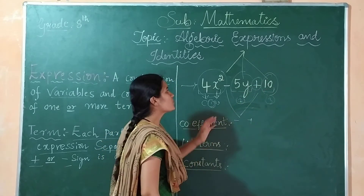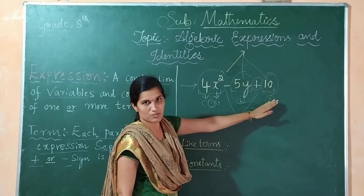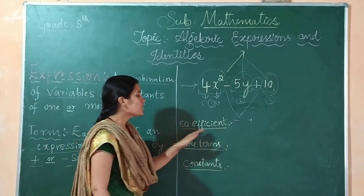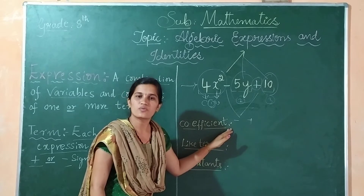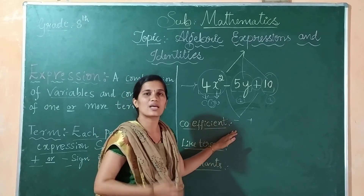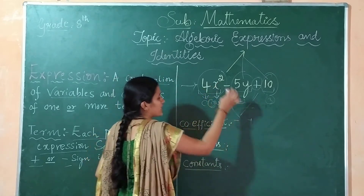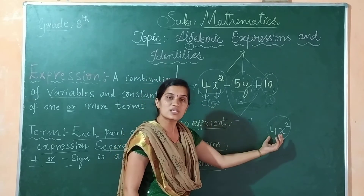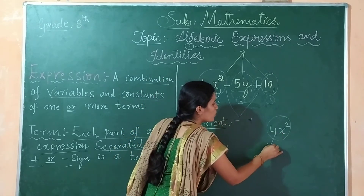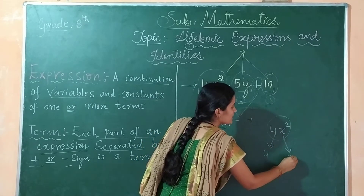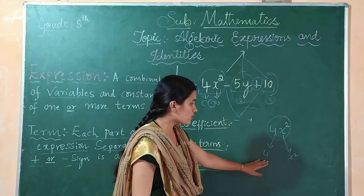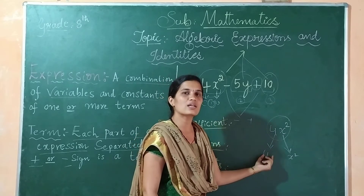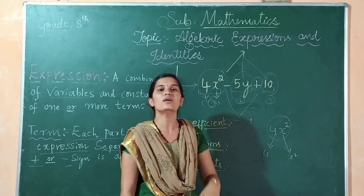Now you know what is expression and what is a term. Now we should learn about what are coefficients. But before going to the coefficients, I would like to say about factors. Take 4x² — this is one term. This term has two factors: 4 is one factor and x² is another factor. Each and every single constant or single variable itself is counted as a factor.